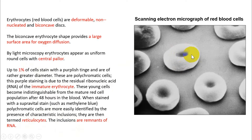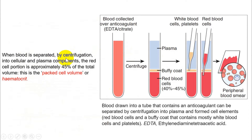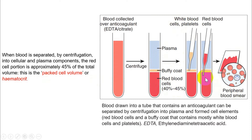Normally red blood cells look like biconcave discs. When blood is separated by centrifugation, it divides into two main parts: plasma and red blood cells, with a small buffy coat in between. The red blood cell part is called the packed cell volume or hematocrit — it is 40 to 45 percent. Plasma is about 55 percent. The buffy coat contains white blood cells and platelets. In a peripheral smear of red blood cells viewed under a microscope, you should know the terms packed cell volume and hematocrit — it is 45 percent of our blood.